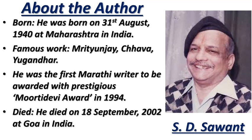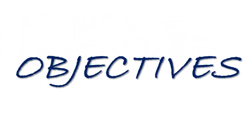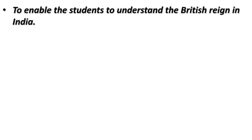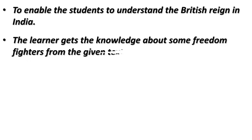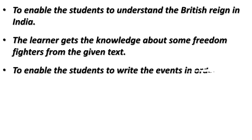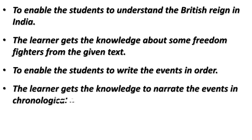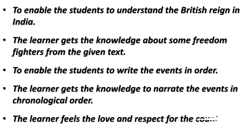Now let us know the objectives of the chapter. Number one: to enable students to understand the British reign in India. Number two: the learner gets knowledge about some freedom fighters from the given text. Number three: to enable students to write events in order. Number four: the learner gets knowledge to narrate events in chronological order. Number five: the learner feels love and respect for the country and patriots.